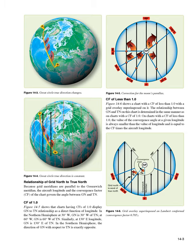CF of less than 1.0: figure 14-6 shows a chart with a CF of less than 1.0 with a grid overlay superimposed on it. The relationship between GN and TN on this chart is determined in the same manner as on charts with a CF of 1.0. On charts with a CF of less than 1.0, the value of the convergence angle at a given longitude is always smaller than the value of longitude and is equal to the CF times the aircraft longitude.